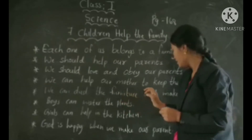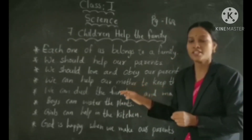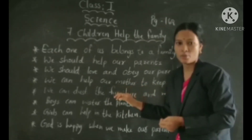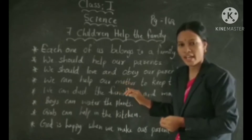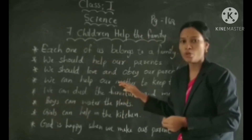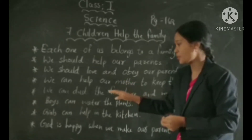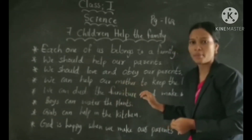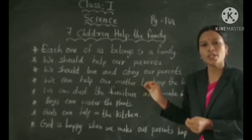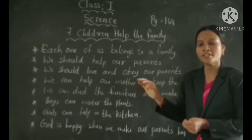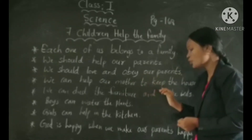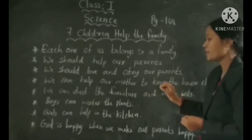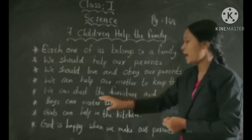Make the beds, dust the furniture — table, chairs, dining table. You can dust and make beds. You only sleep on the beds, so you only make beds. This is also a small work in the family.